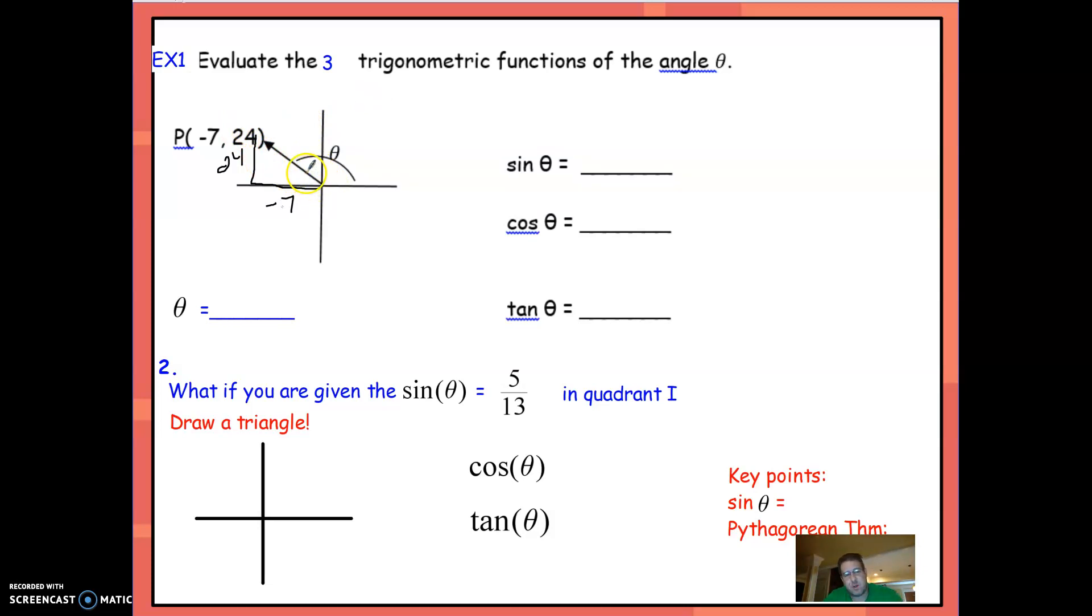So this says negative 7, and this would be 24 because that's x and y. It doesn't really look like that because it looks way further to the left than it is up, but that doesn't matter. We need to know the radius. You should know your Pythagorean triplet: 7, 24, 25. Or you can use Pythagorean Theorem. Do 7 squared plus 24 squared equals the radius squared, and it happens to be 25. So sine is y over r, that's 24 over 25. Cosine is x over r. And tangent is y over x, so 24 over negative 7.